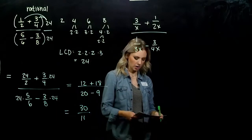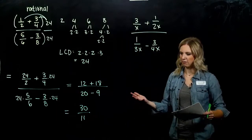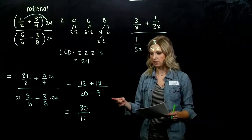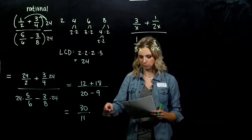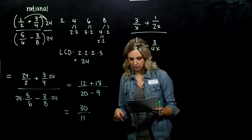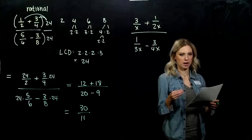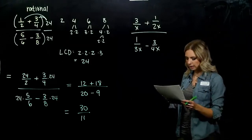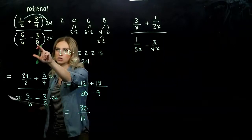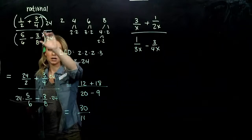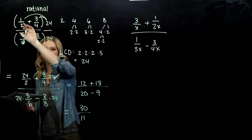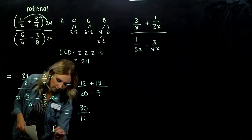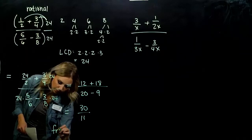We always want to ask: can we simplify further? No — 11 is prime. So when we multiply in this way, what happens is we clear out all of the fractions in the numerator and in the denominator, clearing out all those fractions.